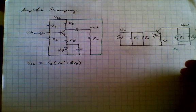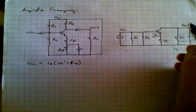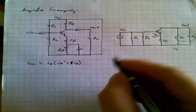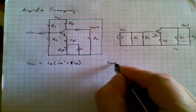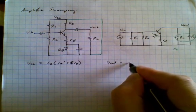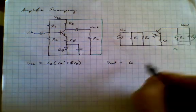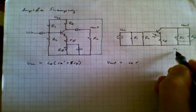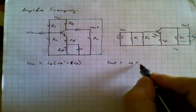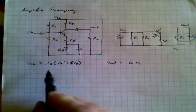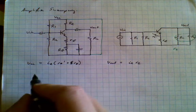And at Vout, the output will be the collector current. Vout is equal to the collector current times the resistance it flows through and that is this one over here, the parallel combination of RL and RC.